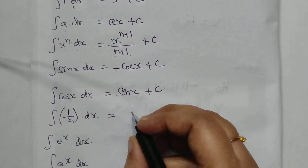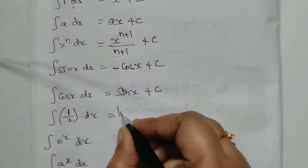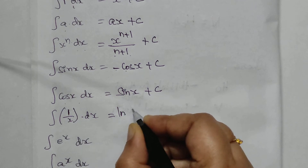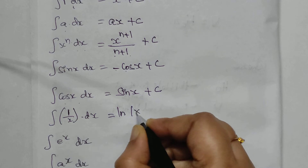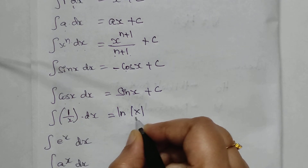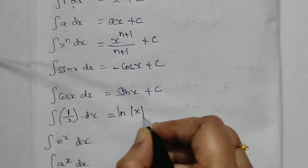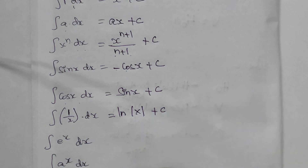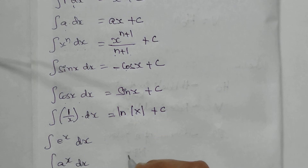Next, the integral of 1 by x dx — integrating 1 by x gives us the log of modulus of x, plus a constant C.